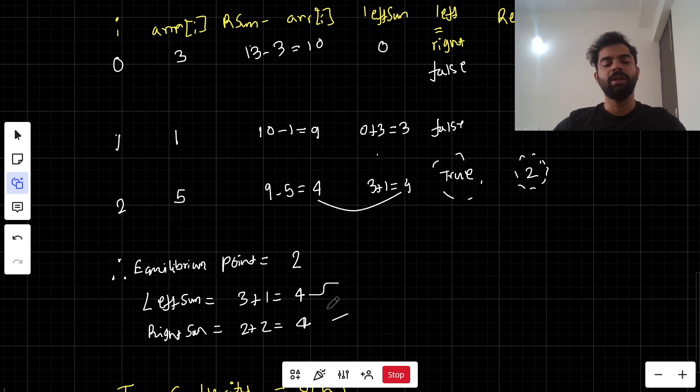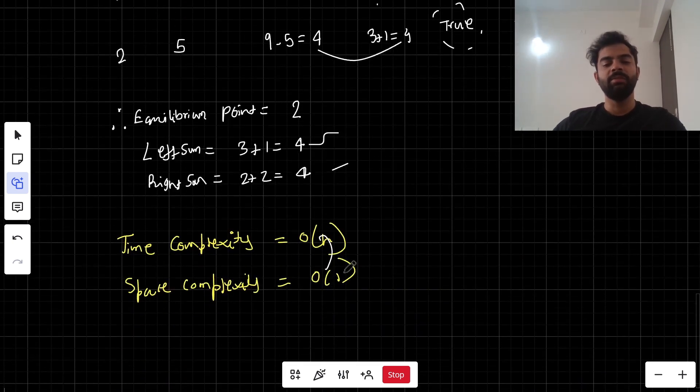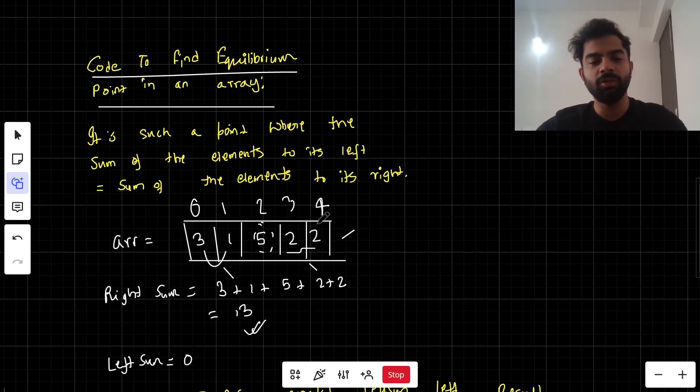The time complexity for this problem is O(n) and space complexity is O(1). Now we're going to the code section and try to execute this particular set of code.